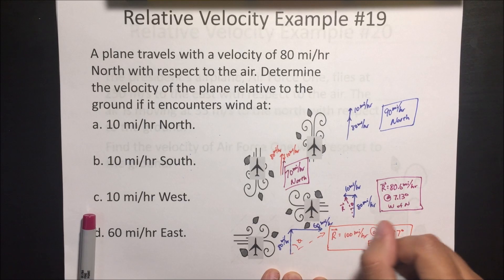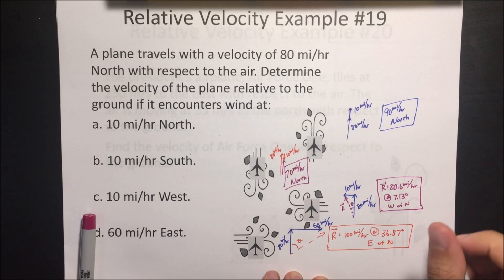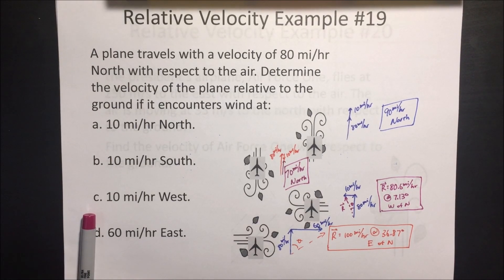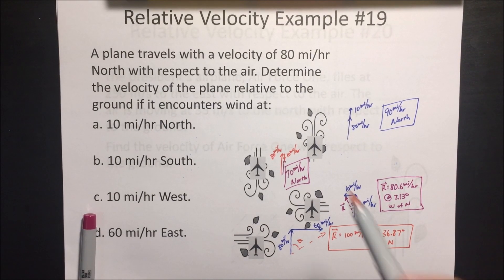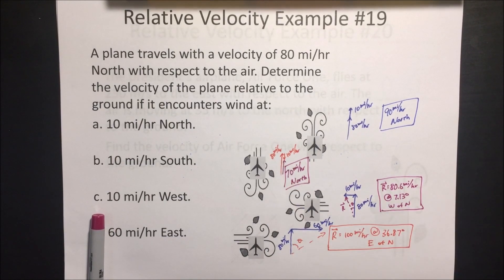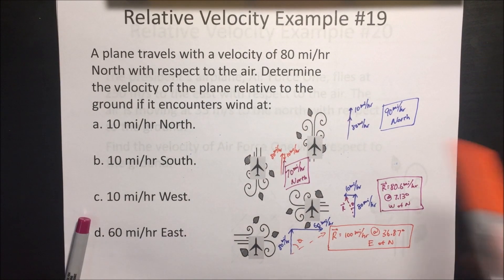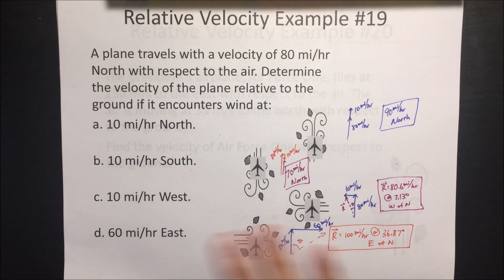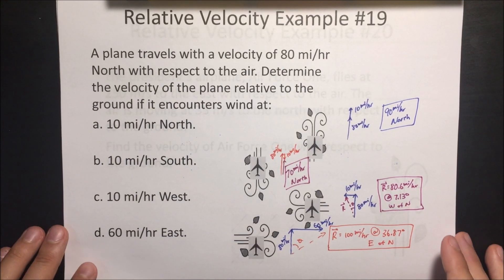This is how we do 2D relativity problems. The wind is going to make the plane go faster in all cases except when it's going directly against it. This is how we figure out how much faster it's going and what direction it's going to start pulling the airplane.